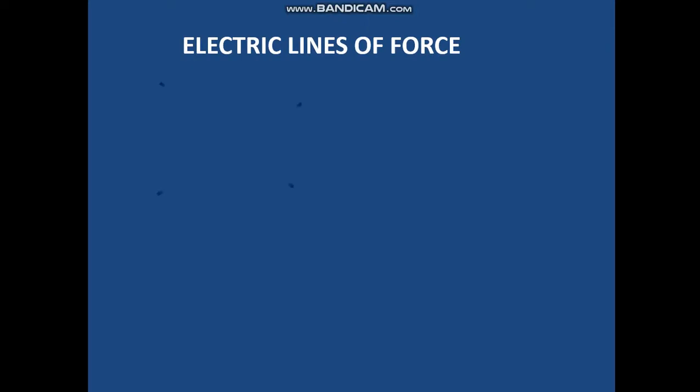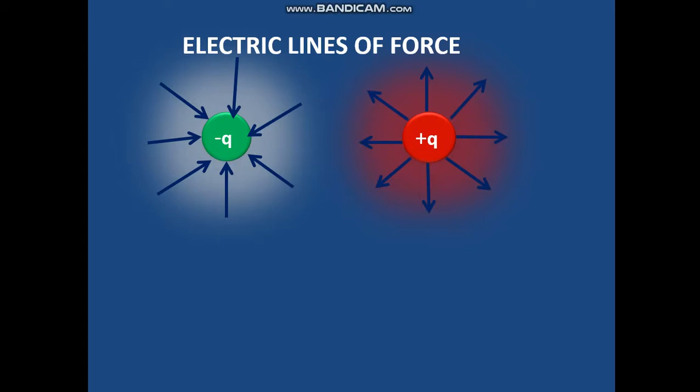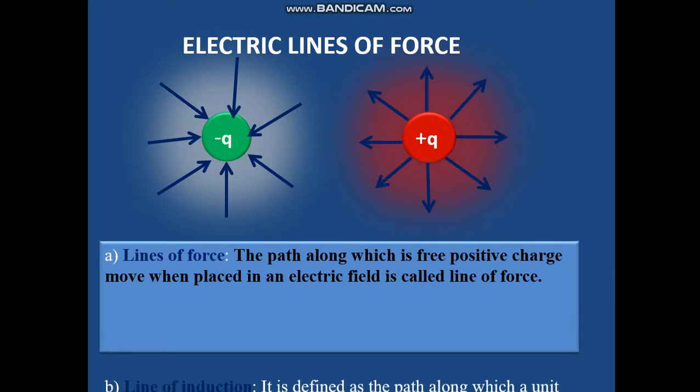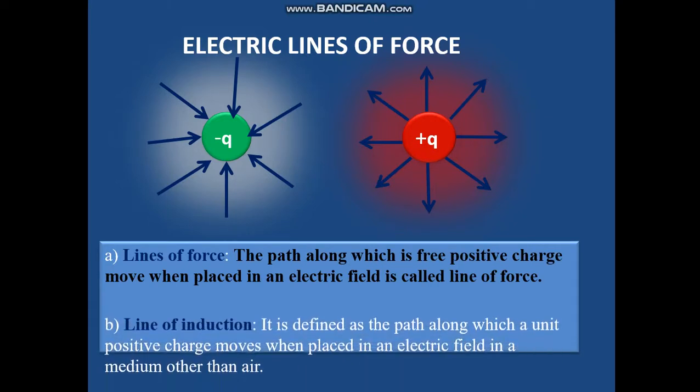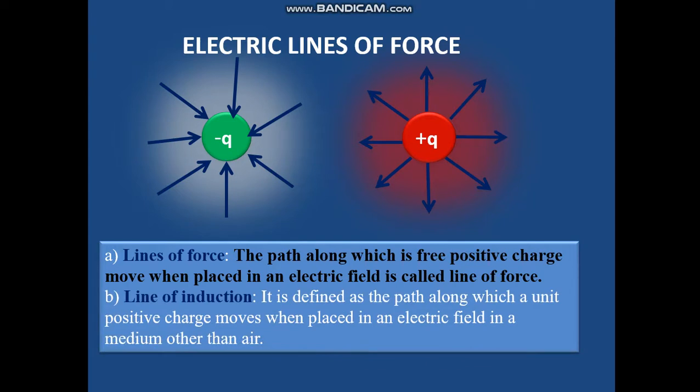Electric lines of force: if you have a negative charge, these imaginary lines are directed inwards. If it is a positive charge, these lines are directed outwards. The path along which a free positive charge moves when placed in an electric field is called lines of force. Lines of induction are defined as the path along which a unit positive charge moves when placed in an electric field in a medium other than air.